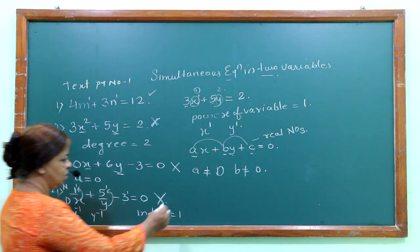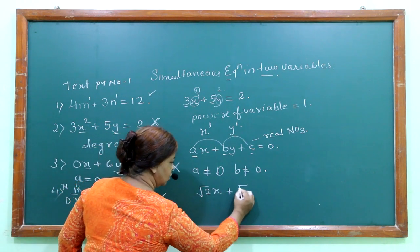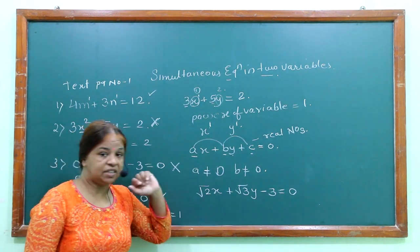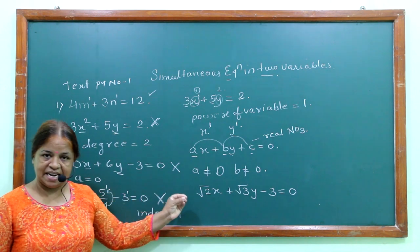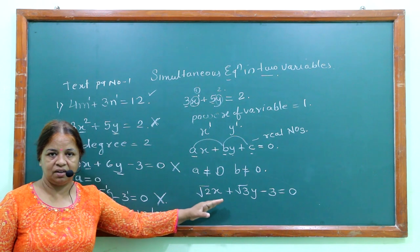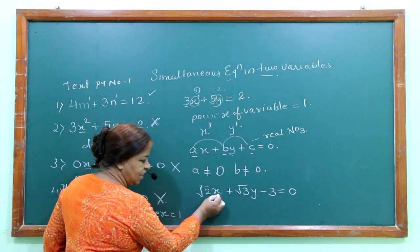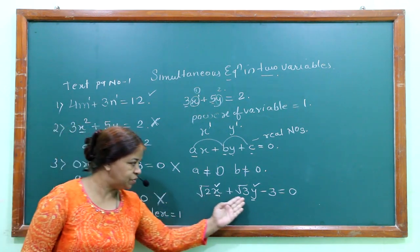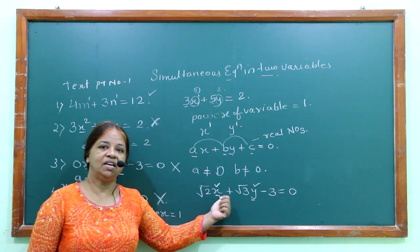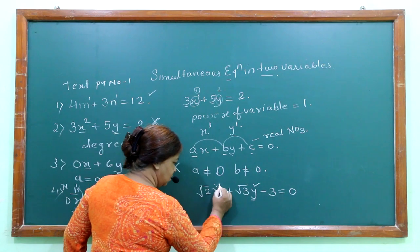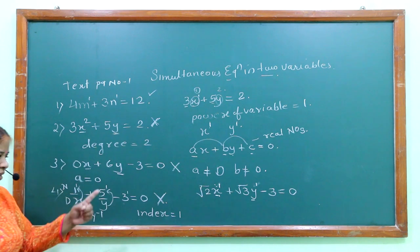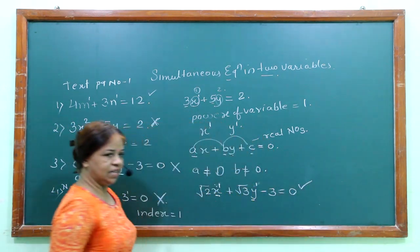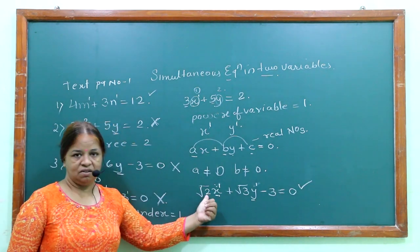Another example: root 2x plus root 3y minus 3 equals 0. Root 2 and root 3 are the coefficients — these are a little different from what we have seen. There is one variable x and another variable y, so it has two variables. The index of x is 1 and the index of y is 1, so the degree is 1 and there are two variables. It is a simultaneous equation in two variables. The coefficients of the variables don't matter whether they are in root form or not.